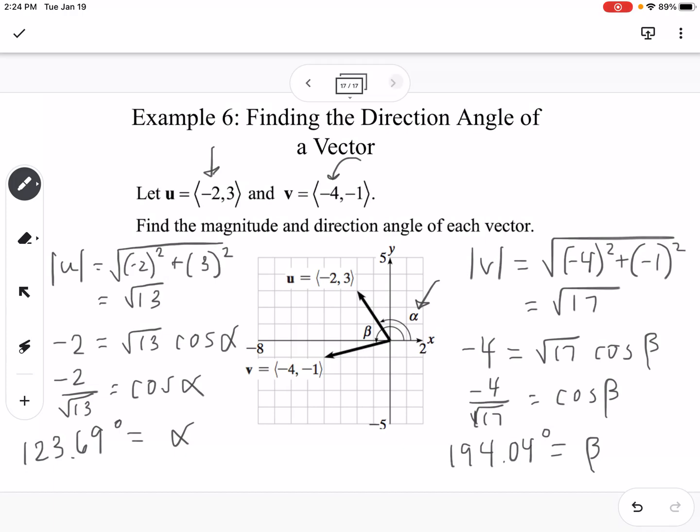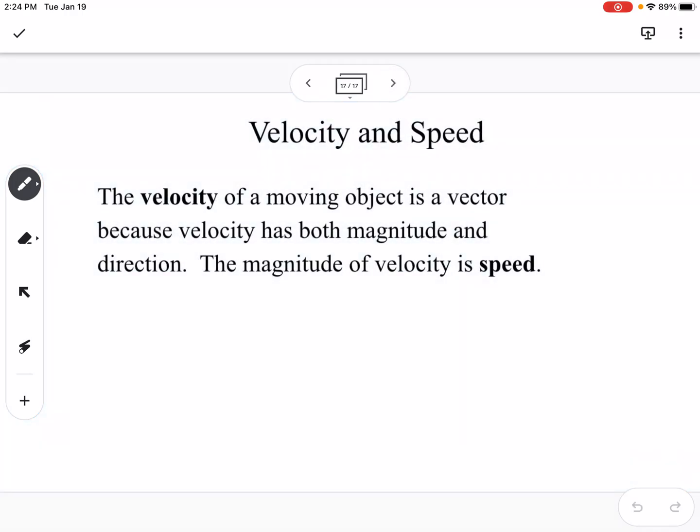The last thing is just to note real-life applications. Velocity is a good example of a vector, because velocity has both a magnitude and a direction. When we're talking about velocity, the speed is the magnitude, but then we also have a direction when we're talking about velocity, whereas speed just gives a value. Velocity gives speed and a direction. So that would be a real-life application of vectors.